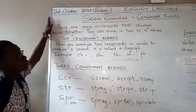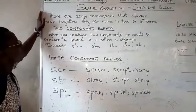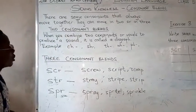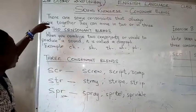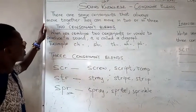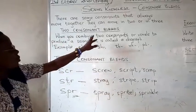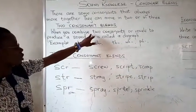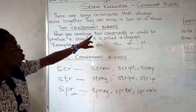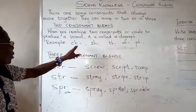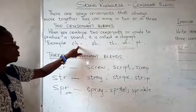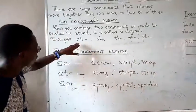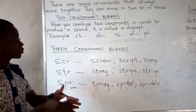Last Wednesday, we talked about consonant blends, and we said that there are some consonants that always move together — that is, they work together. We discussed the two consonant blends: when we combine some of them, two or three together. We concentrated more on the two consonants, and we got CH, SH, TH, WH, and BH. We saw that these two consonants always move together in words.